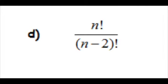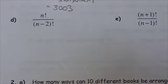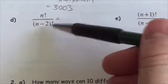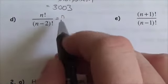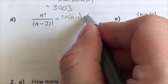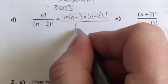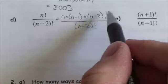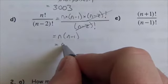Now: n factorial divided by (n minus 2) factorial. This can be trickier because we're dealing with variables. n factorial is clearly larger, so I expand it: n times (n minus 1) times (n minus 2) factorial, over (n minus 2) factorial. Those cancel, leaving n times (n minus 1), or n² minus n.